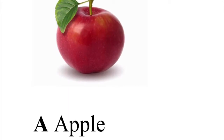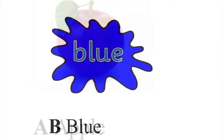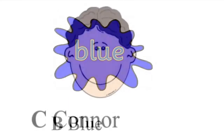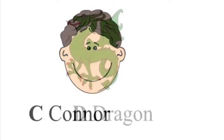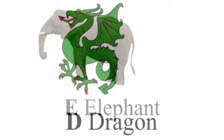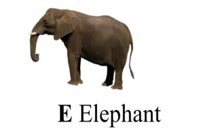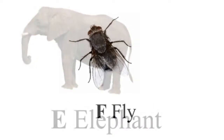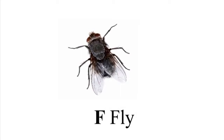A is for Apple. B is for Blue. C is for Connor. D is for Dragon. E is for Elephant, for U and I. F is for Fly.